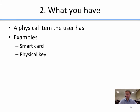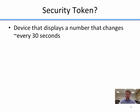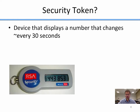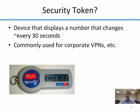Some computer systems let you authenticate with a physical key — you'll sometimes see this in military systems where you insert and turn a physical key as part of authentication. Another example is a security token: a device that displays a number that changes every 30 seconds. The pattern of number changes is locked into the hardware, and a server knows what that number should be at a given time. To log in, you might provide your username, password, and the current number on your security token.